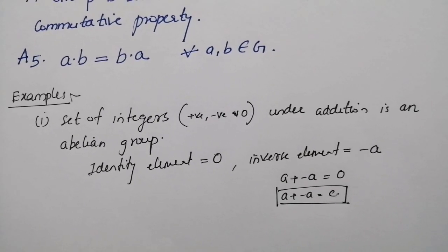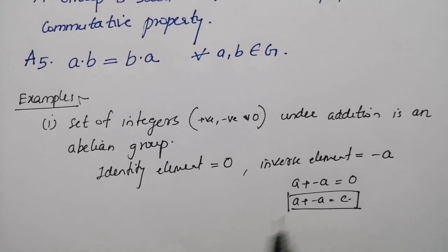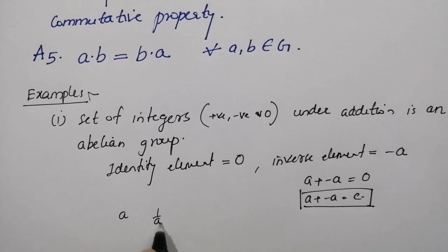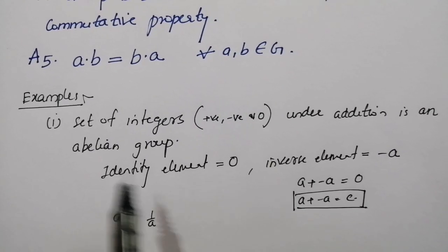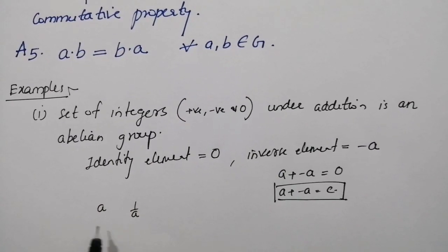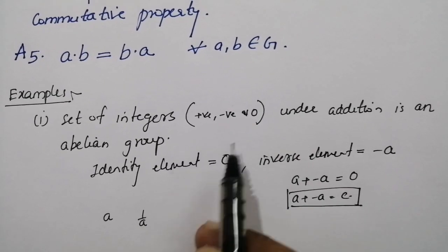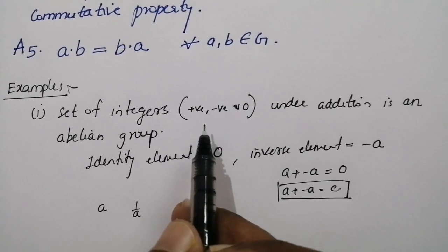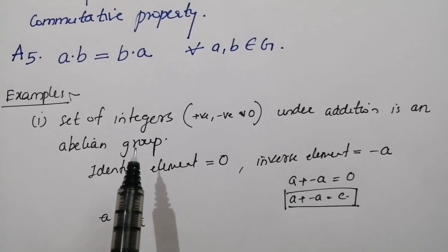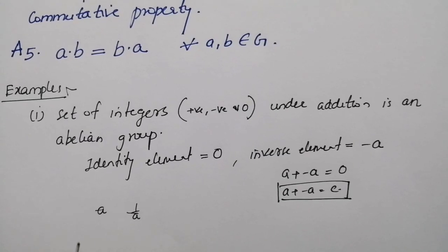But the set of all integers under multiplication is not an abelian group. Why? Because in the case of the inverse element, for the element a the inverse will be 1/a. But 1/a is not present in the integer set. So we can say that the set of integers under multiplication is not an abelian group.